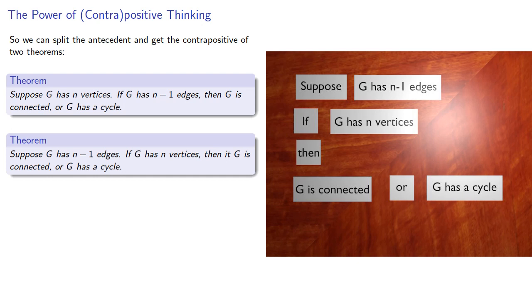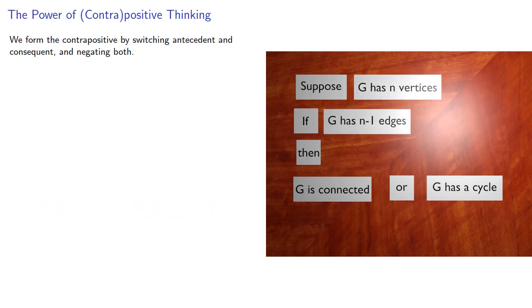Since it's probably easier to count the vertices than the edges, we'll focus on the first and leave the other for homework. Now, remember, we formed the contrapositive by switching the antecedent and consequent and negating both.